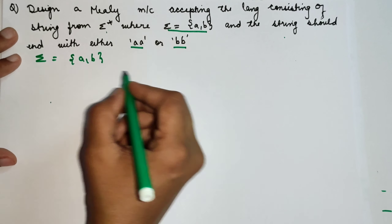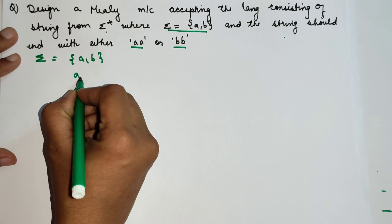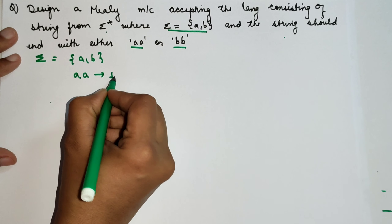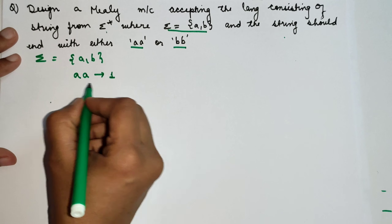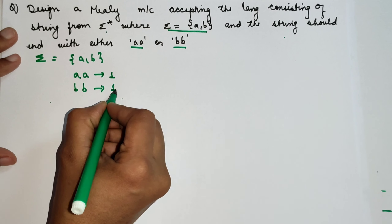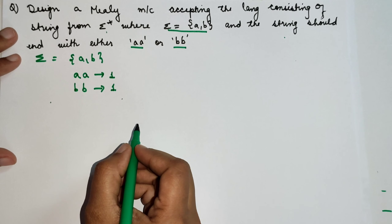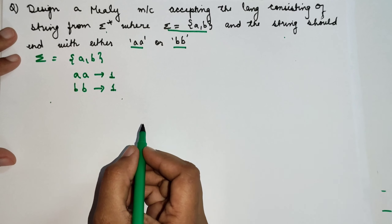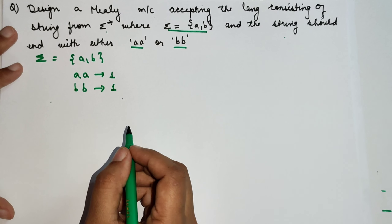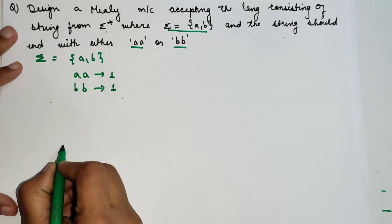Let us assume whenever we see AA, it should produce an output of 1. And whenever we see BB, it should also produce an output of 1. We are assuming this for the construction of a Mealy machine. So let us start.